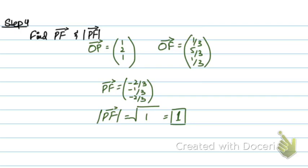So that was one method of doing this, all four steps. You find the equation of the line passing through the point perpendicular to the plane, then find the point of intersection of this line with the plane, then form vector PF and find its magnitude. The other way to do this is using a straightforward formula.